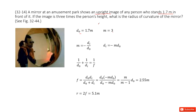Now the problem asks: what is the radius of curvature of the mirror? So we need to find the radius of curvature. Let's look at the focal length first. From D0 and m, how can we get f?